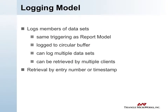The logging model within 61850 works very much the same as the reporting model. Values from the sequence of changes of data within the data set are logged using the same triggering as the report model. It's logged to a circular buffer, typically much larger than the reporting model. You can log multiple data sets into one circular buffer by using multiple log control blocks all pointing at the same buffer. Multiple clients can receive this log — it's open to requests from multiple associations at the same time — and you can retrieve values from that log either by entry number or time stamp.